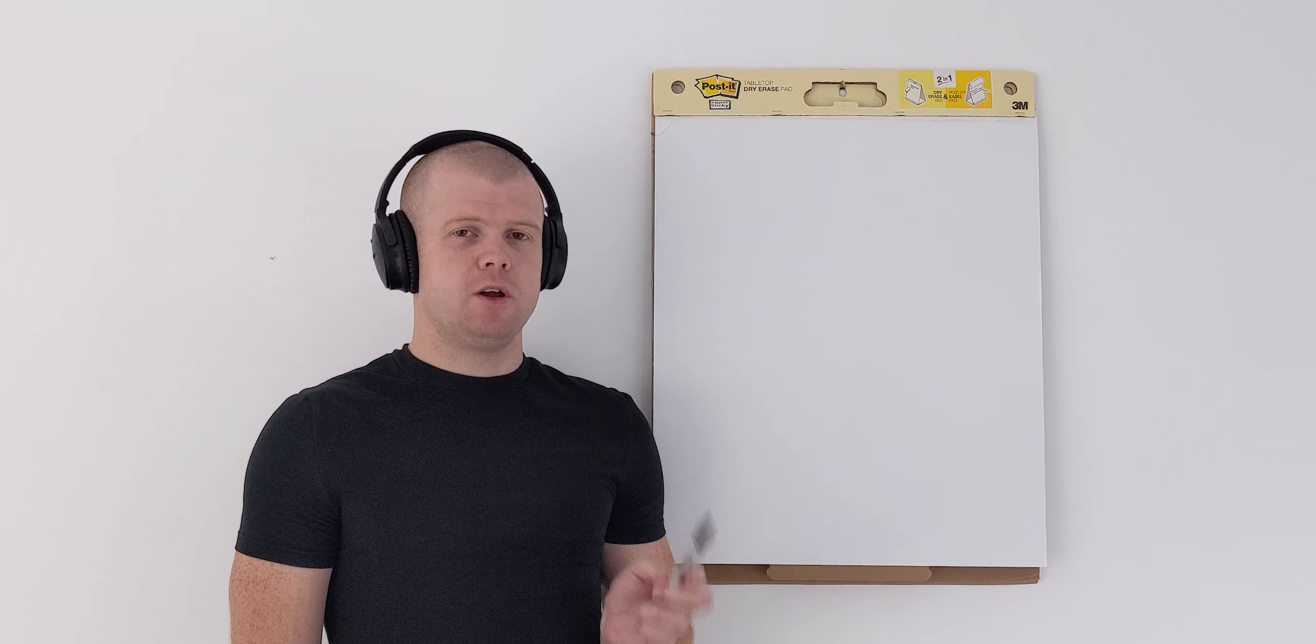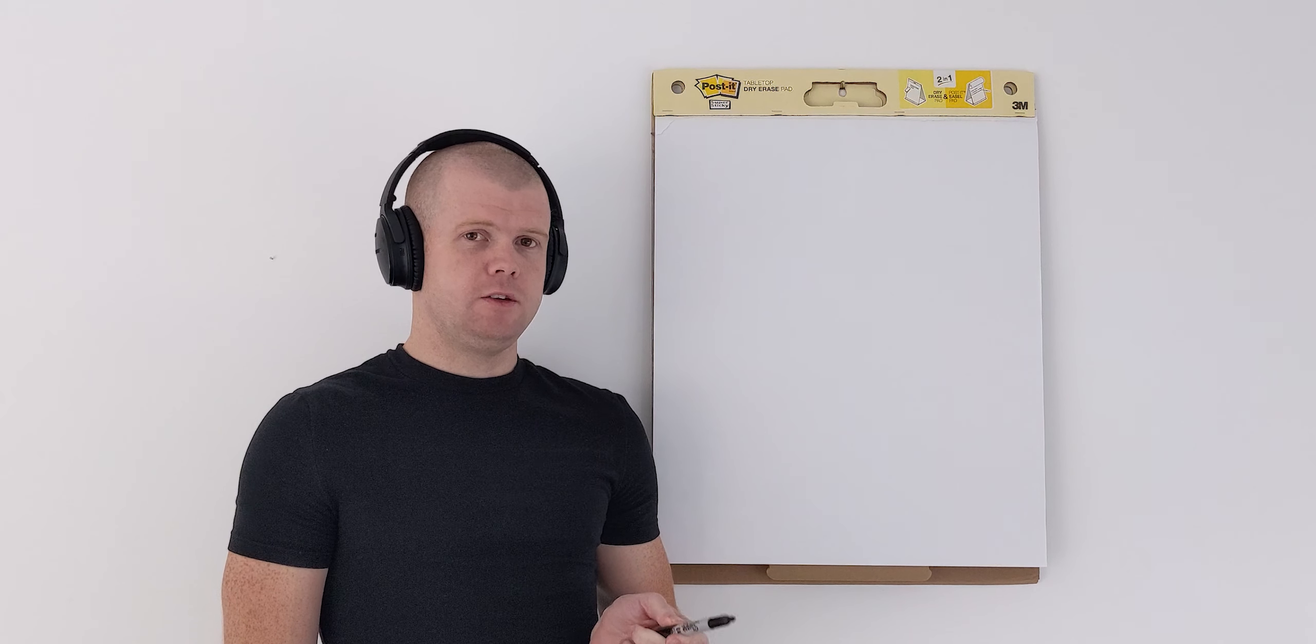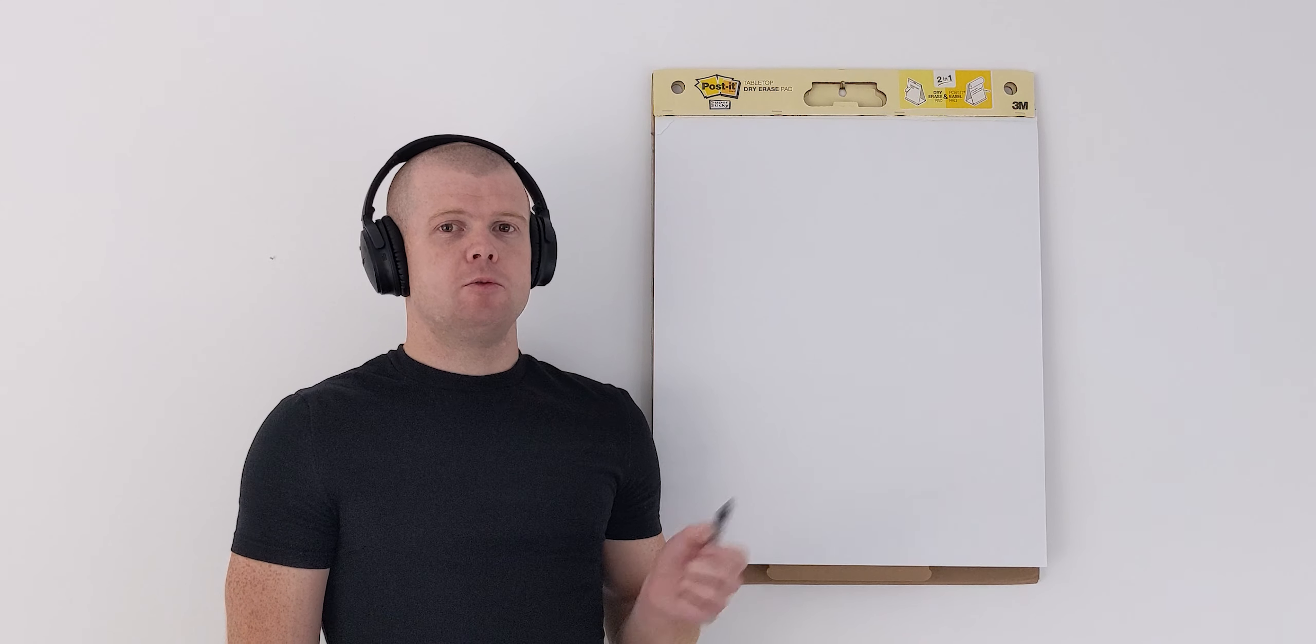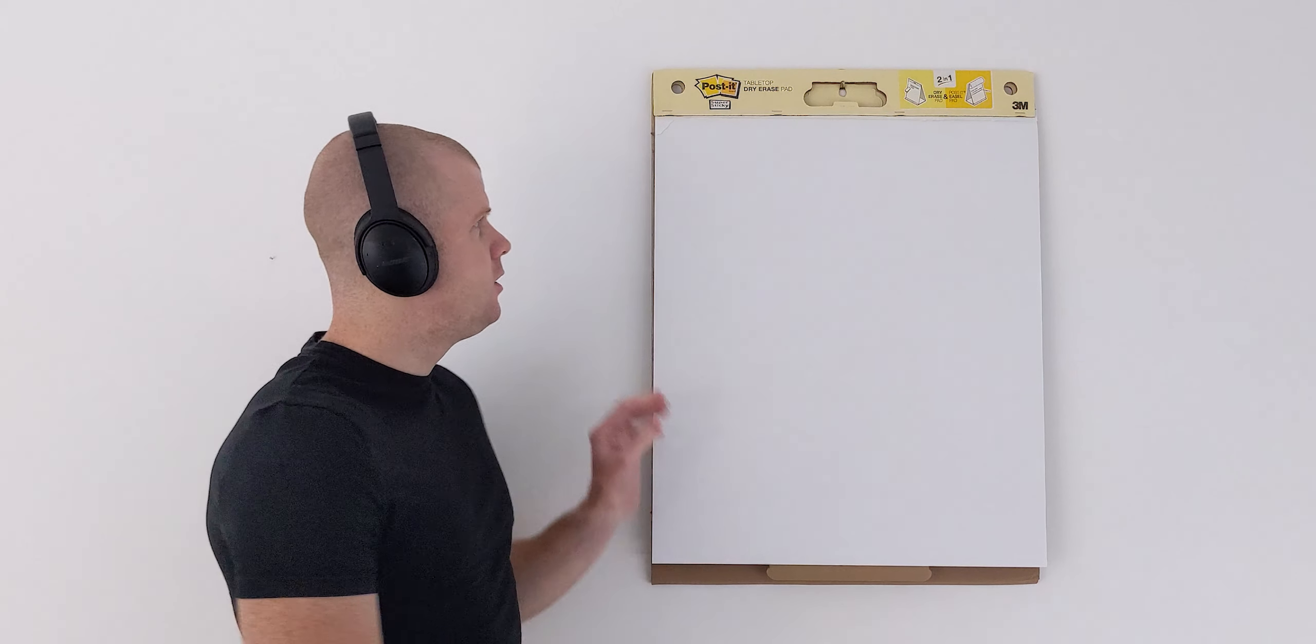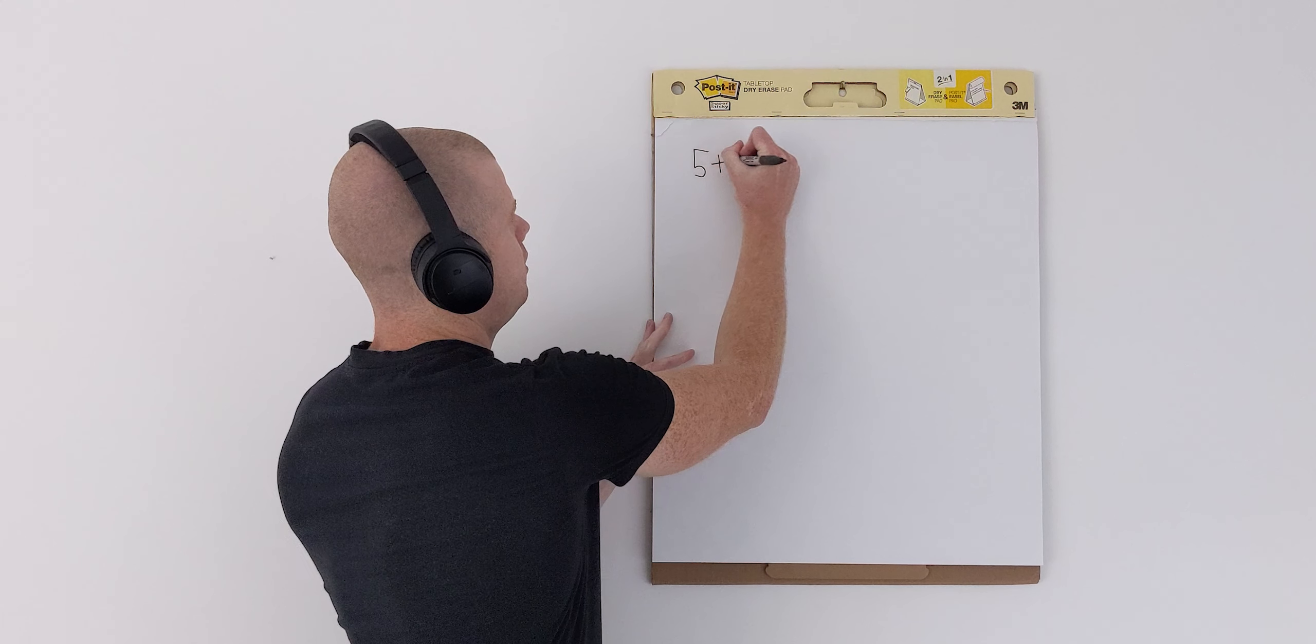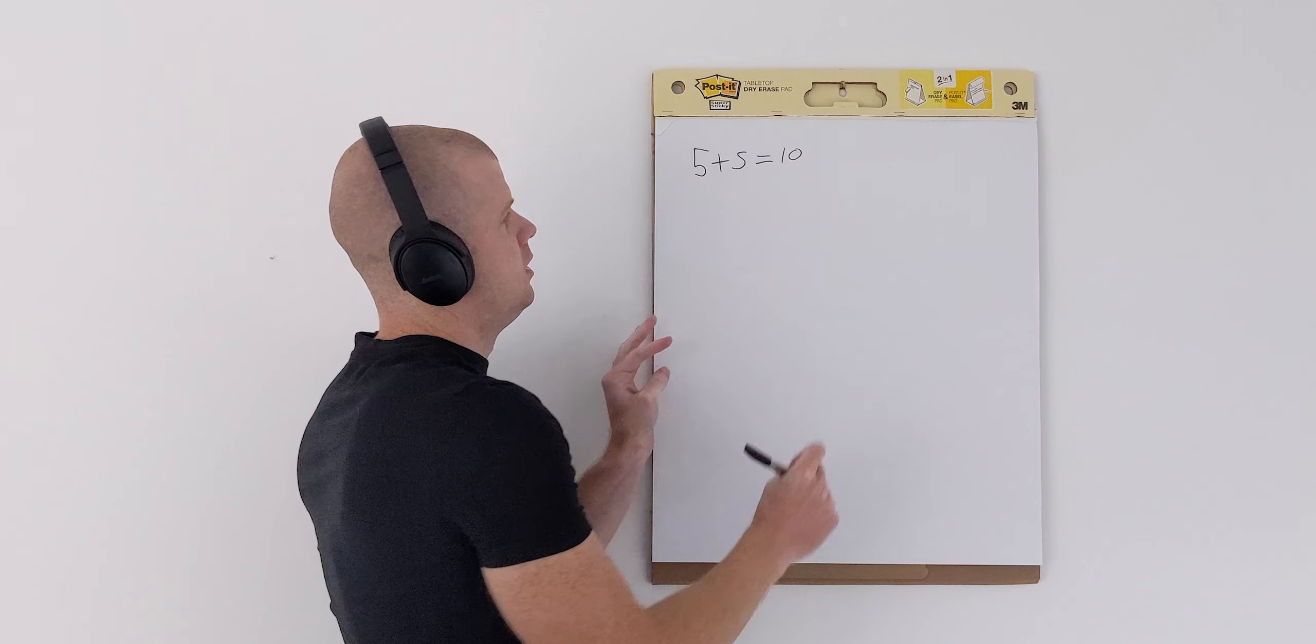To get us in the right mindset, we are going to do a quick mental exercise. In this mental exercise, the numbers are arbitrary, but they represent the output we get from a system. So we are assigning a value to the output that we receive. So let's take a look at our first system. And in this system, we have 5 plus 5, which equals 10.